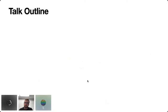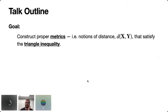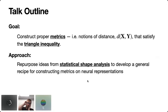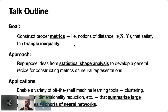The rest of the talk I'll walk you through a statistical framework. First, I'll argue that we want notions of distance that are proper metrics satisfying the triangle inequality. Second, I'll describe our approach using statistical shape analysis to achieve this. Finally, I'll give a couple of examples of how to use these methods in practice.